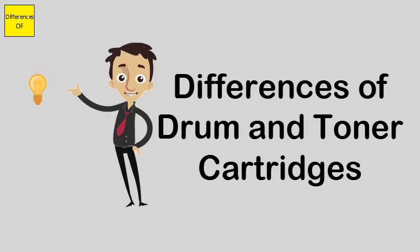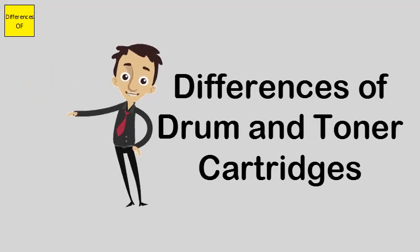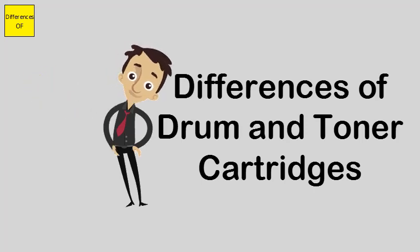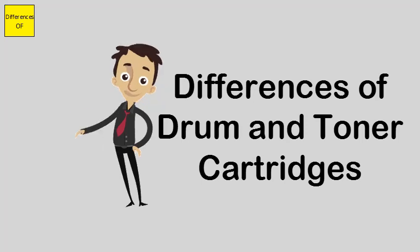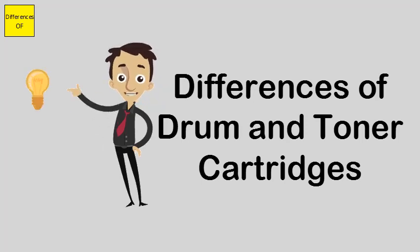Drum cartridge only draws the toner needed from the toner cartridge. Toner cartridge holds two types of toner: black and colored.